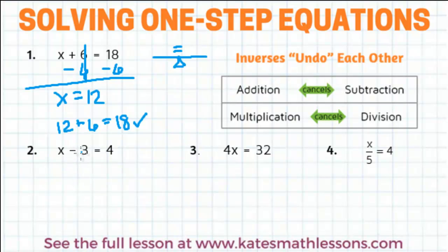So we can cancel out a minus 3 by adding 3 to both sides. This minus 3 and plus 3 cancel out, so it's just an x left over, and then 4 plus 3 is 7.